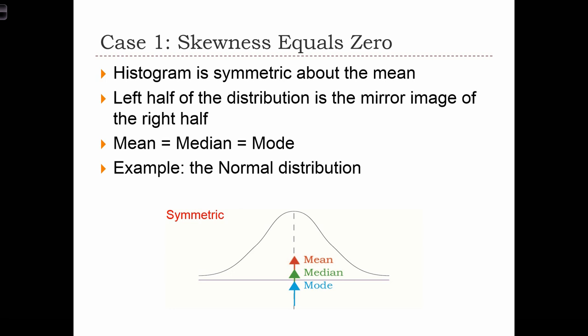Here's the case where skewness equals zero. In other words, we have a symmetric distribution. The left half of the distribution is the mirror image of the right half. In this case, we should find, at least in the theoretical case, that the mean of the distribution is equal to the mode, and it's equal to the median as well.